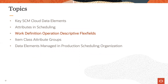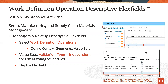In the following section, we will review the core setup steps for descriptive flex fields on work definition operations. To create user defined attributes, navigate to the setup and maintenance work area. Select setup manufacturing and supply chain materials management in the context switcher LOV. Finally, search for and launch the task to manage work setup descriptive flex fields and define flex fields for work definition operations together with their validation value sets. The newly defined flex fields then need to be deployed for use in supply chain execution.